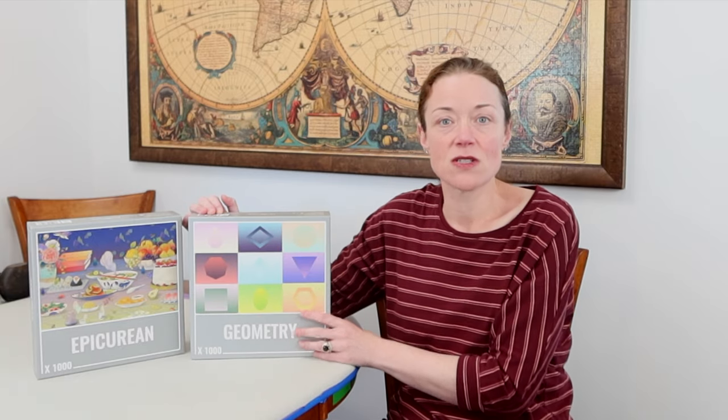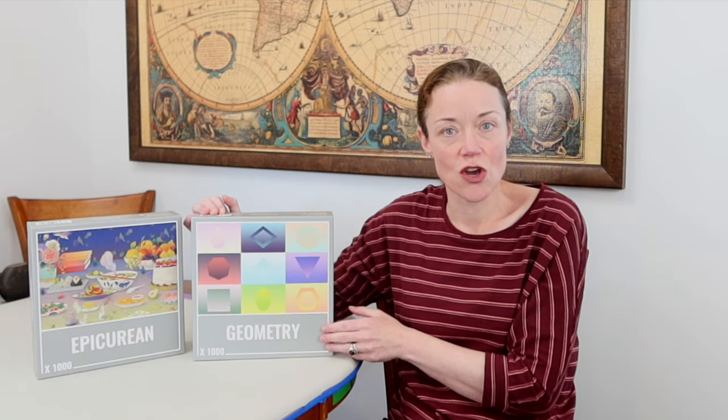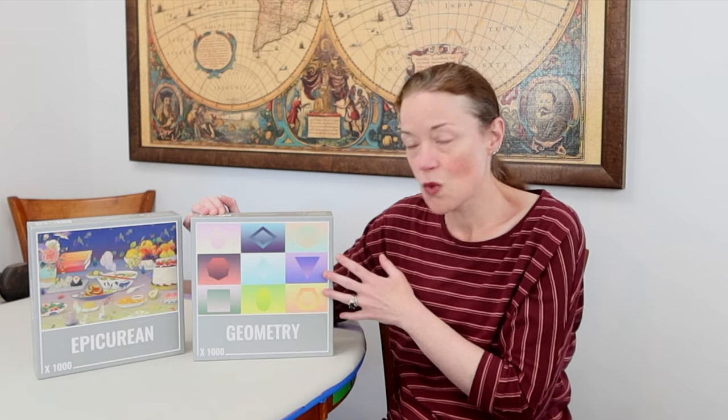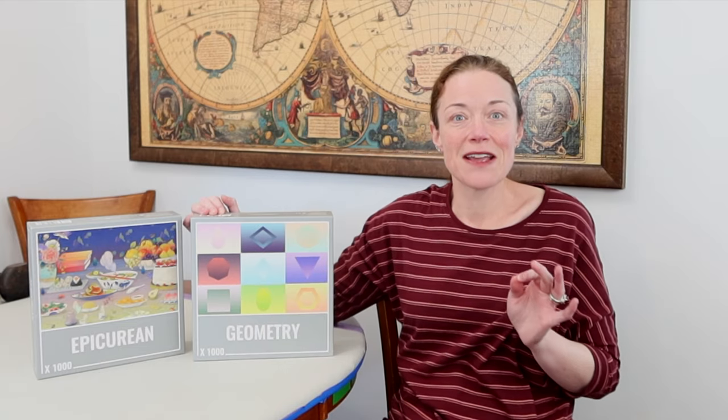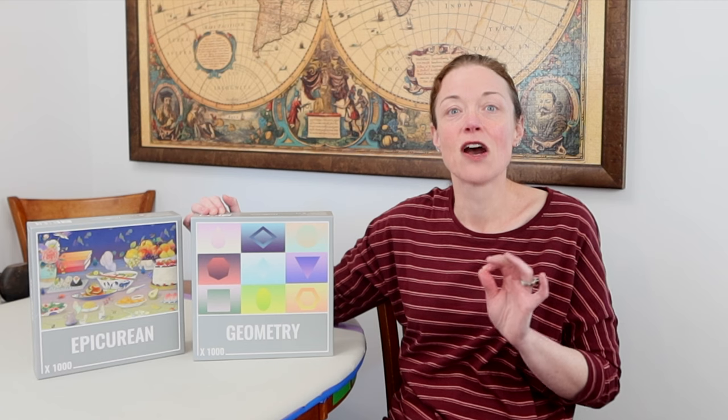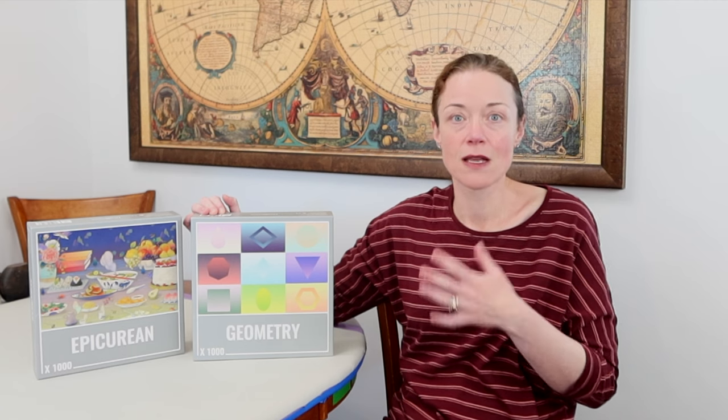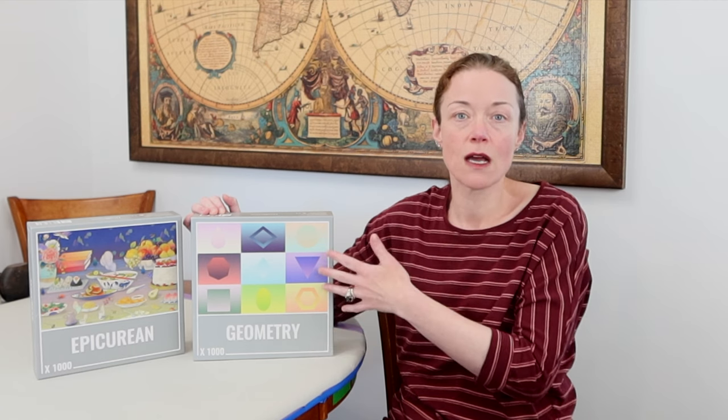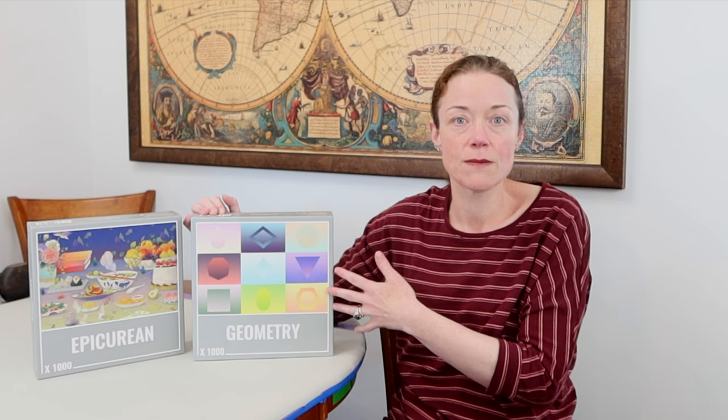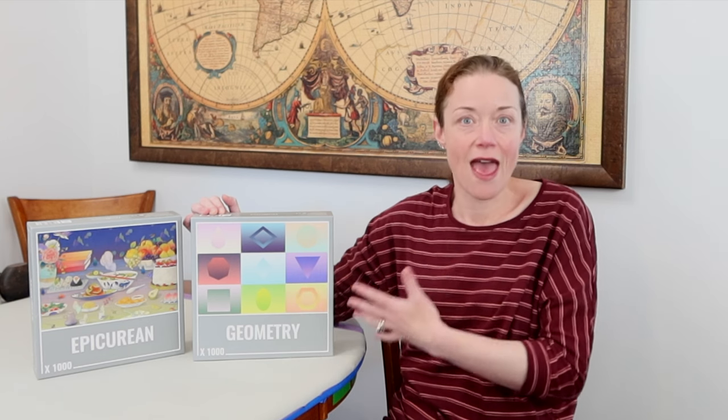So look at this jigsaw puzzle. It's gorgeous. It's called geometry. It has nine squares and it's kind of like a blend of color block and color gradient within the blocks. I mean geometry, color block, color gradient jigsaw puzzle. This is heaven for me.